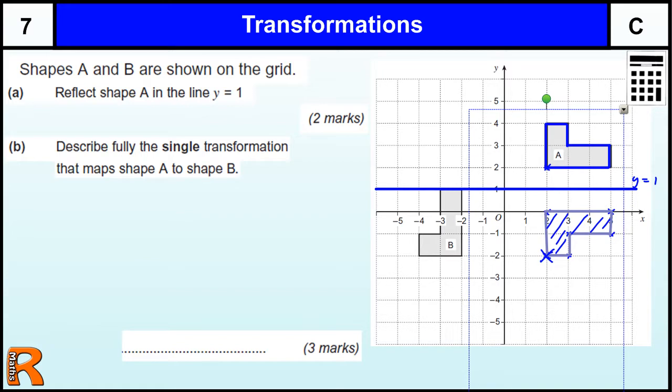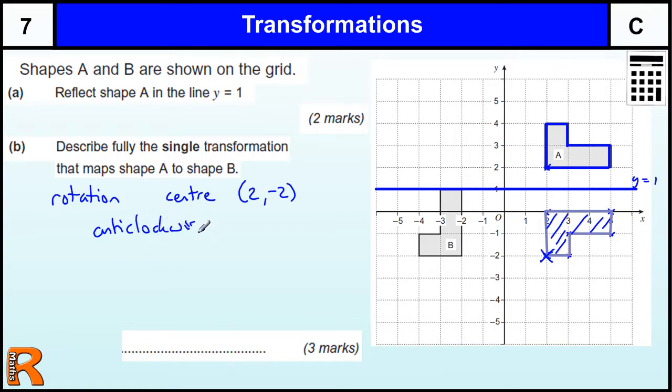So to describe that we need to say we get one mark for the word rotation. We get one mark for the centre, which is 2, -2, and we get one mark for saying that it is anticlockwise 90 degrees. That is 3 marks.